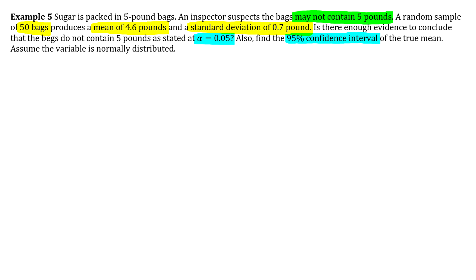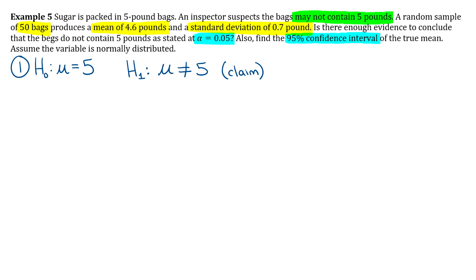Let's do the hypothesis test first. For step one, our null hypothesis — since this is talking about the mean — we'll use mu. They suspect the bag may not contain 5 pounds, so null is mu equals 5. The claim goes in the alternative: mu does not equal 5, labeled as the claim. Since it doesn't give a direction of more than or less than, we use the not-equal-to sign.